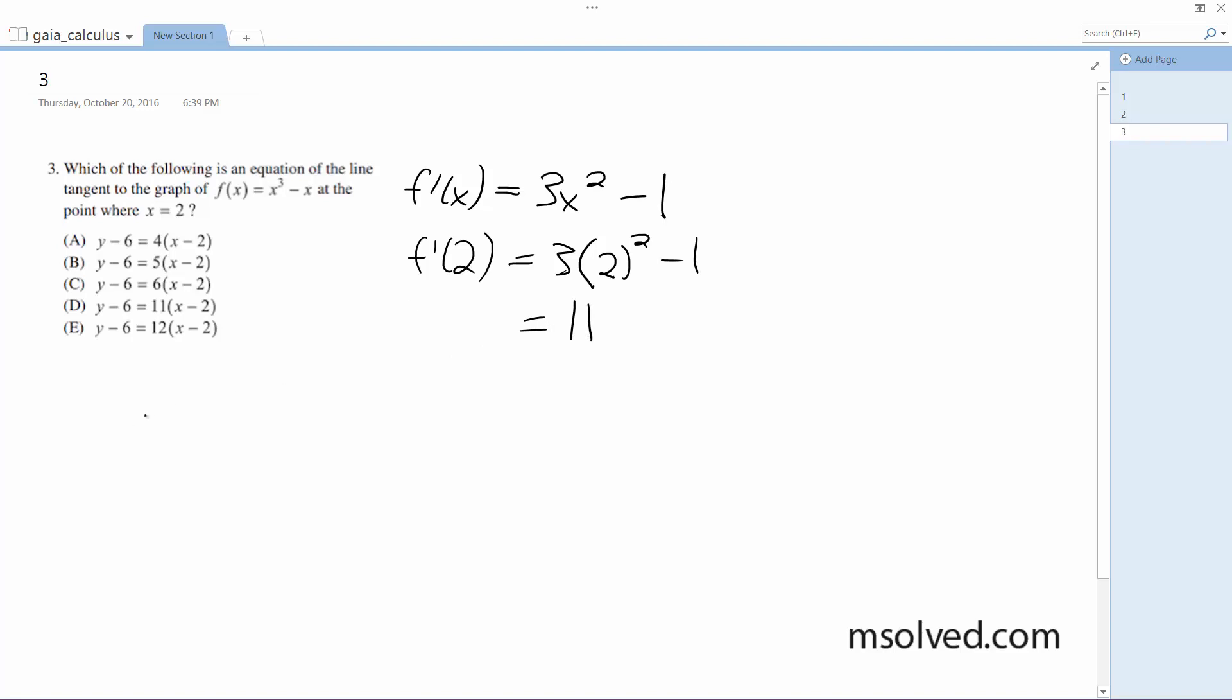All right, so what we do is we plug in at our point. So f(2) is equal to 2³ minus 1, which is equal to 6. So we're going to use our point-slope form: y minus y₁ is equal to m, which is the slope, times x minus x₁.